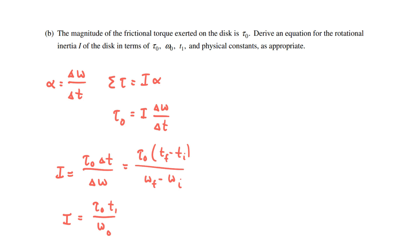One point of discussion is whether this answer should be positive or negative. Because it's a rotational inertia value, the answer should be positive. We have zero minus omega-naught in the denominator, but tau-naught represents the frictional torque that opposes the motion. If the motion is in the positive direction, that torque is also negative. Those negative signs cancel, leaving a positive result for the rotational inertia. There's another way to approach this derivation that's equally valid, so I'll show that too.